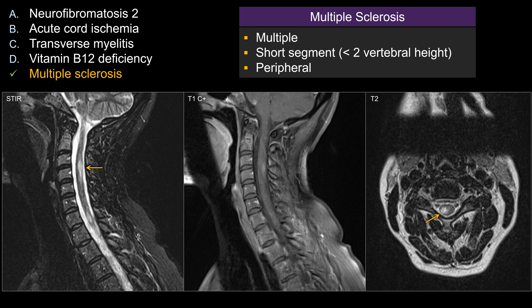In addition, you can see that one of the lesions shows enhancement, so the patient has evidence of active or recent demyelination. In fact, you can see a second lesion that also shows enhancement, which is a little harder to see on the periphery of the image — right at the junction between the pons and medulla. So the patient has multiple enhancing lesions, indicating active or recent demyelination.